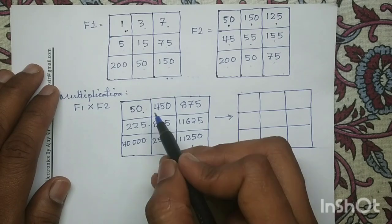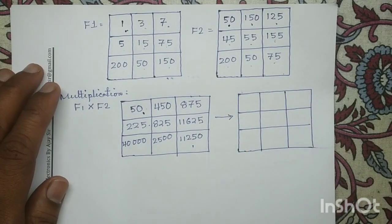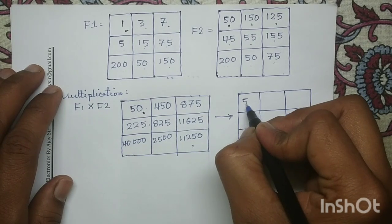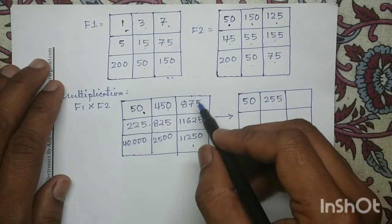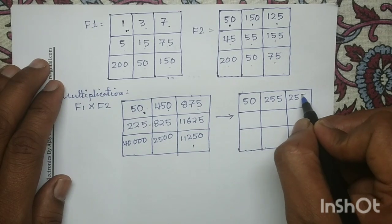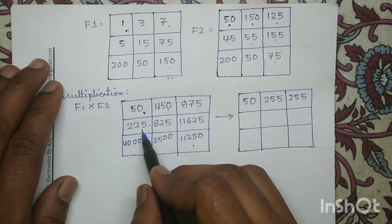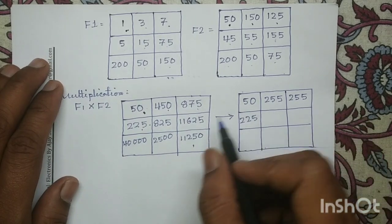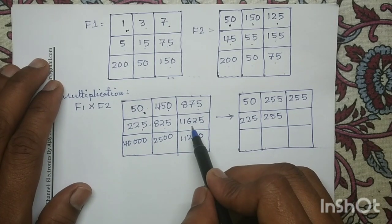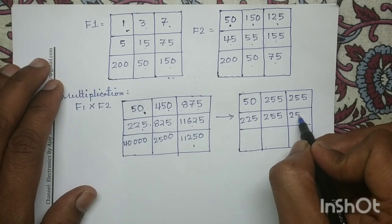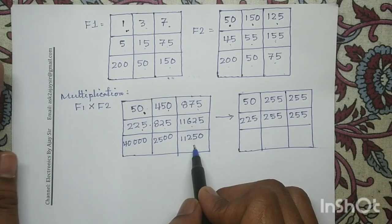In the first row, pixel value 50 satisfies the condition (lies between 0 and 255), so we write 50. For 450, which is greater than 255, we assign intensity level 255. For 875, above 255, we write 255. In the next row, pixel value 225 lies between 0 and 255 so we write 225; 825 is above 255 so we write 255; 11,625 is above 255 so we write 255. In the last row, all pixel values are above 255, so all are assigned intensity level 255.